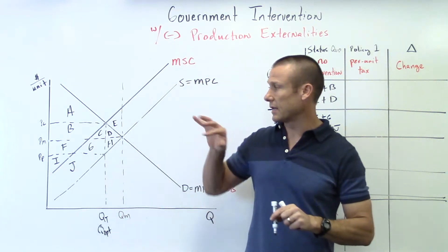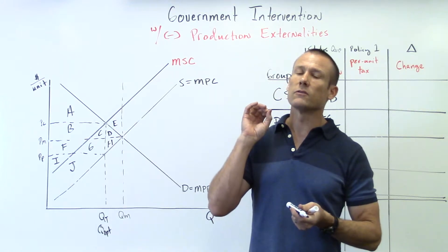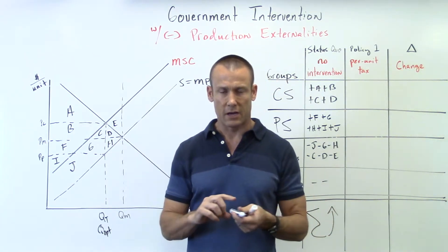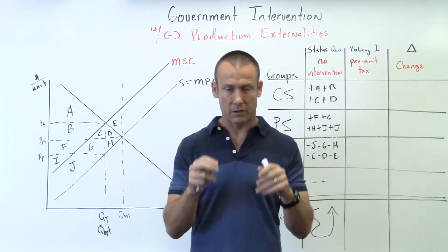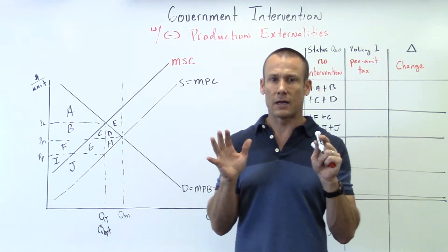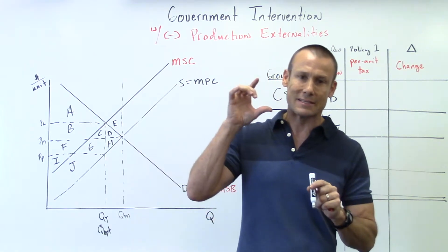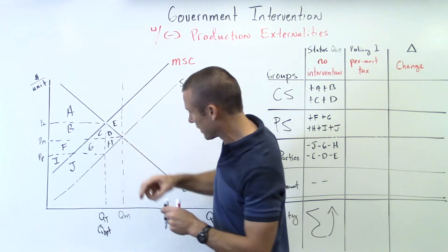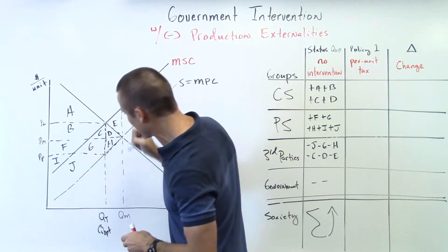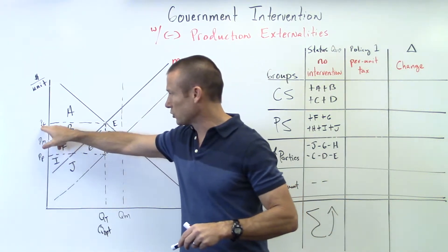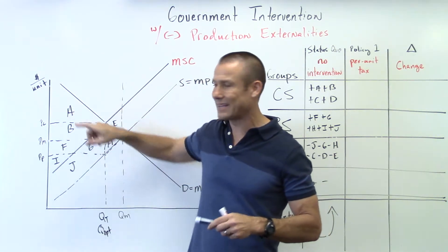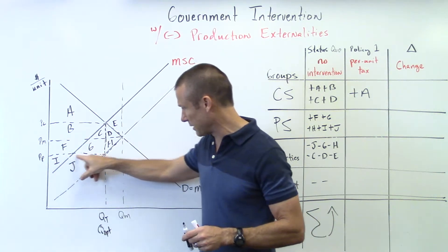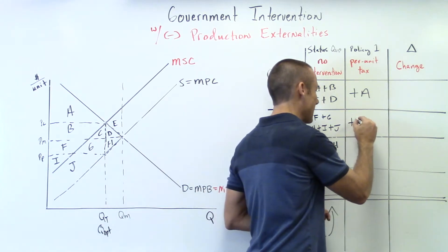Second column: per unit tax. Now we're going to bring in a per unit tax. It is almost impossible in the real world to get the per unit tax to equal exactly the per unit externality, but in this stylized classroom example we can say we got it perfect — the per unit tax equals the per unit externality. Once that's in place, consumer surplus: price consumer goes up, price consumer to demand curve, and all the consumer is getting now is plus A. Producer surplus: PP down to the supply curve gives us plus I, plus J.